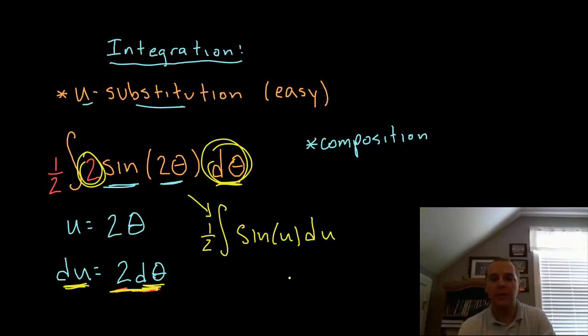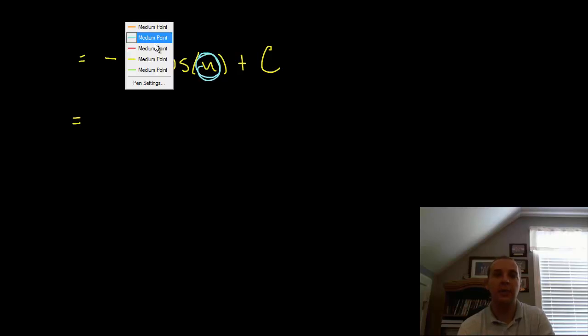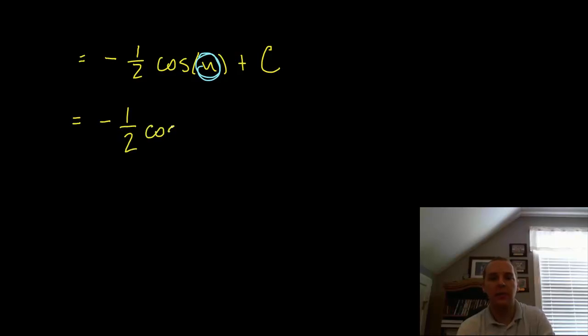That makes it pretty easy to integrate. The integral of sine u would be negative cosine u. So we would have negative 1 half cosine u plus c. And the last step for the final answer is just to go back and write whatever u was back in terms of x, because the original integral was written in terms of x. So the final answer would be negative 1 half cosine 2 theta plus c, and we're done.